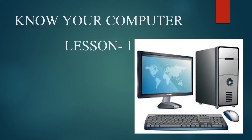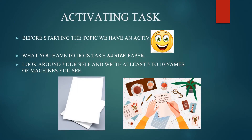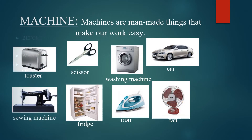This is lesson number one. Before starting the topic, we have an activating task. What you have to do is take an A4 size paper, look around yourself, and write at least 5 to 10 names of machines you see.